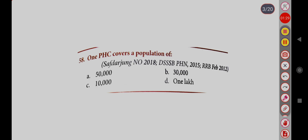One PHC covers a population of: Option A, 50,000; Option B, 30,000; Option C, 10,000; Option D, 1 lakh. Correct answer is Option B, 30,000.